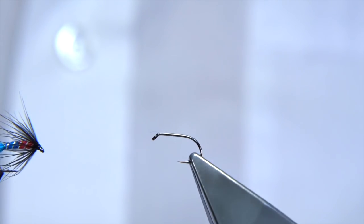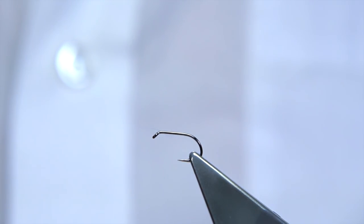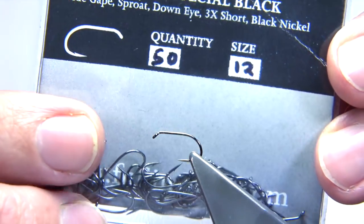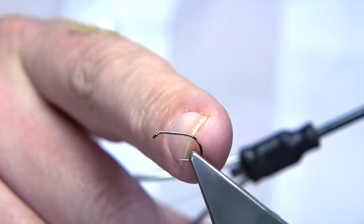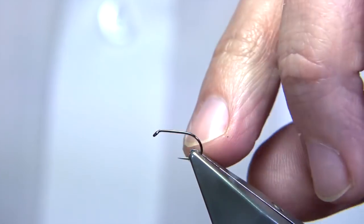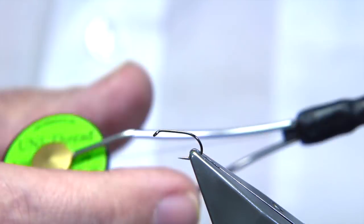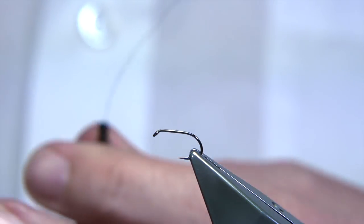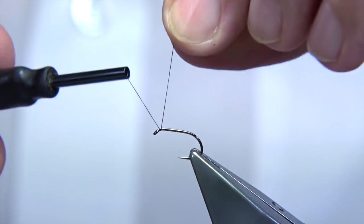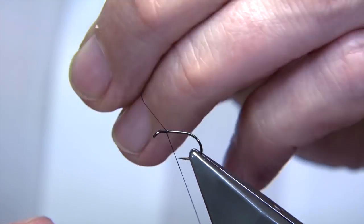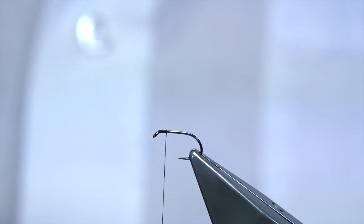I'm going to be tying it on this hook here. This is what they call a short shank special, a size 12. The shank is equivalent to a 14, the gape is equivalent to a size 12. The thread I'm going to be using is a unithread 8-0 in black. I've run the wax through it to start it off. I'm going to start at the eye and come down about a couple of mil from the eye.